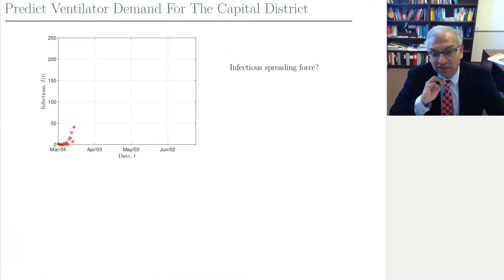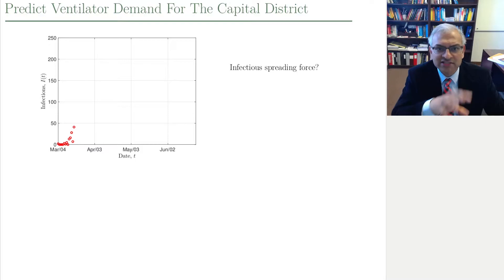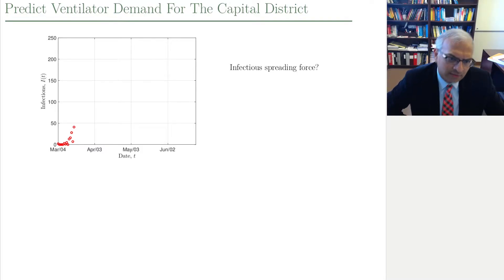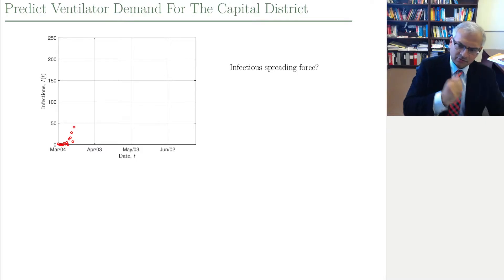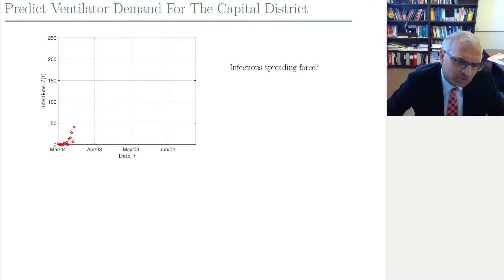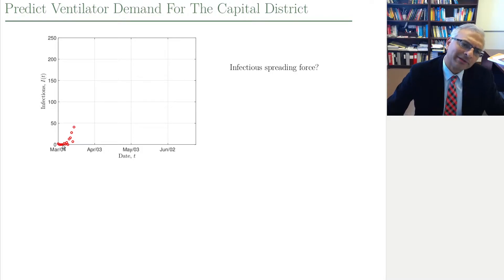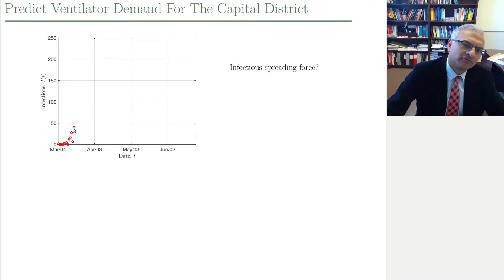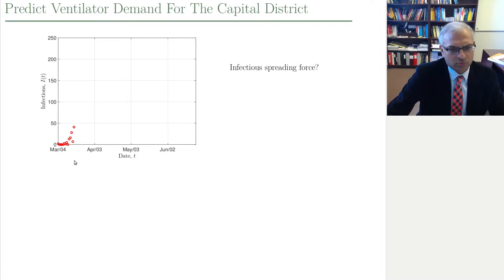I'm going to put you right at the steering wheel of an important question that we faced: how many ventilators will we need? This is a question we faced approximately a year ago. What I'm showing here in red dots are the number of infections in the capital district as we follow along day by day, and you see it almost got up to about 50 at the time we're asking this question.